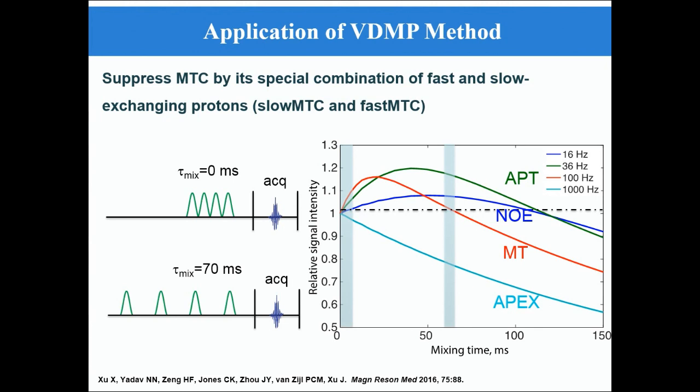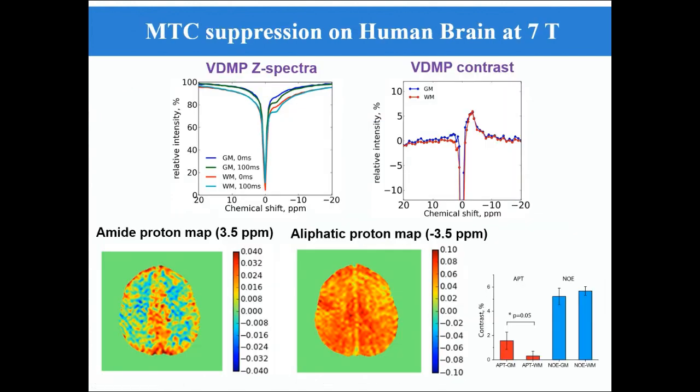First, the VDMP method can be used to suppress the MTC contribution. Because the MT pool contains fast and slow exchange components, the VDMP build-up curve is very unique. By taking the images with the mixing time where MTC has equal contributions and then subtracting these images, the contributions from MTC can be removed. Here are the results on human brain at 7 Tesla. We acquired a VDMP Z-spectrum with mixing times of 0 and 100 microseconds. Then we subtract these two Z-spectra and obtain the CEST contrast without MTC contamination. Using this strategy, we can obtain pure amide proton and aliphatic proton maps.